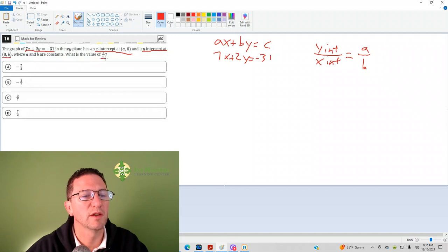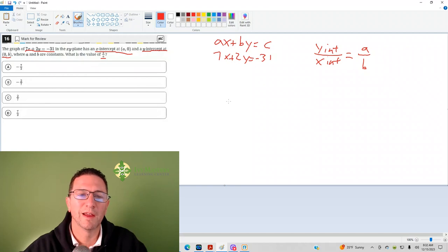and we're looking for the value of b over a. One thing you probably didn't notice is that when it's b over a, what it's asking for essentially is the y intercept over the x intercept.